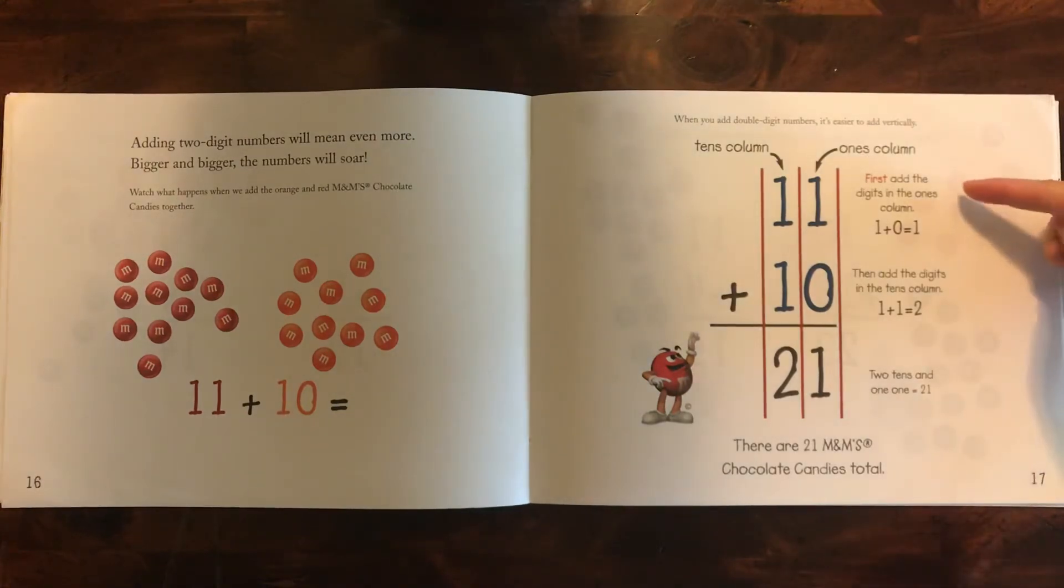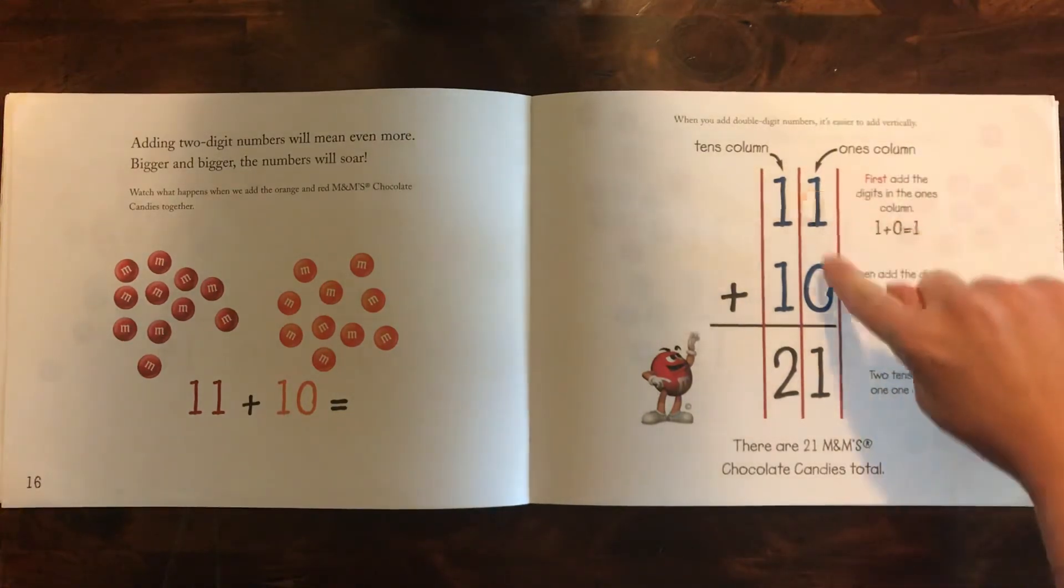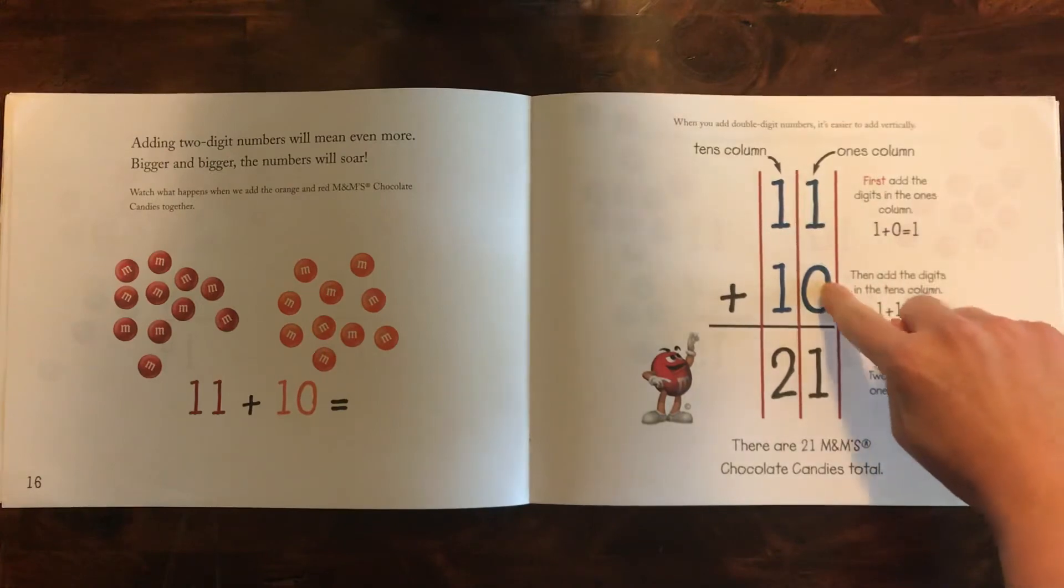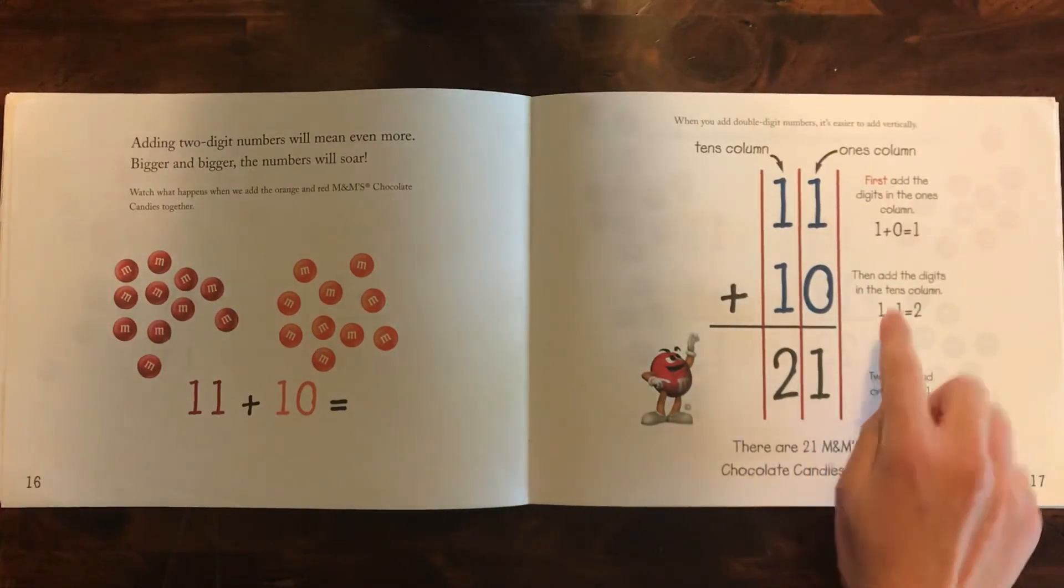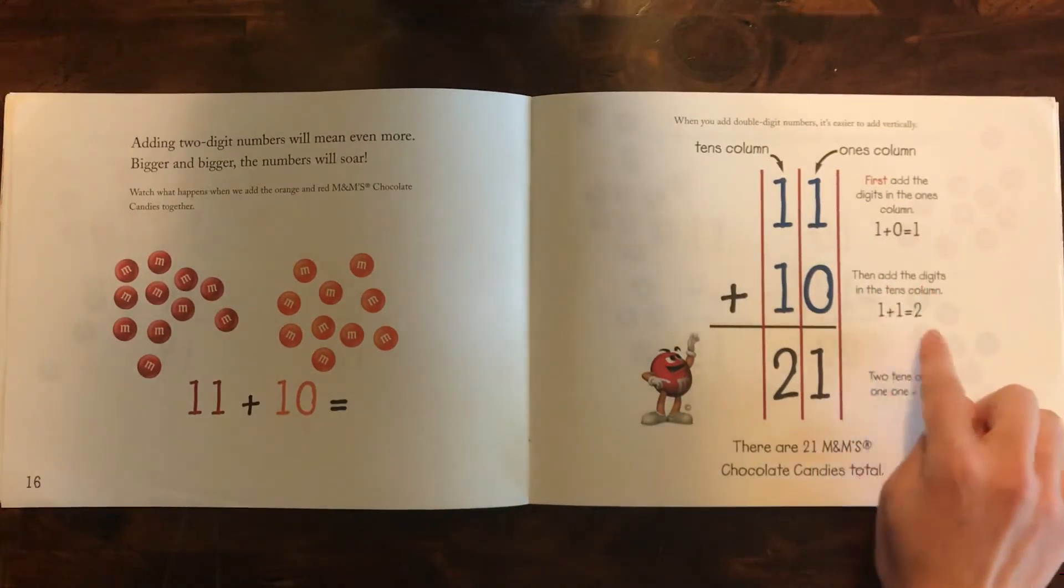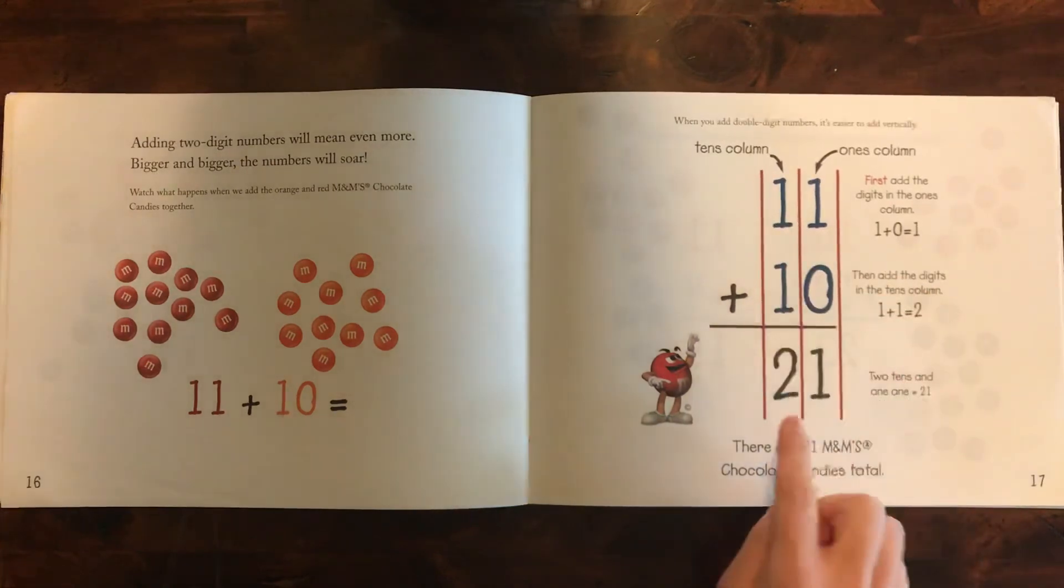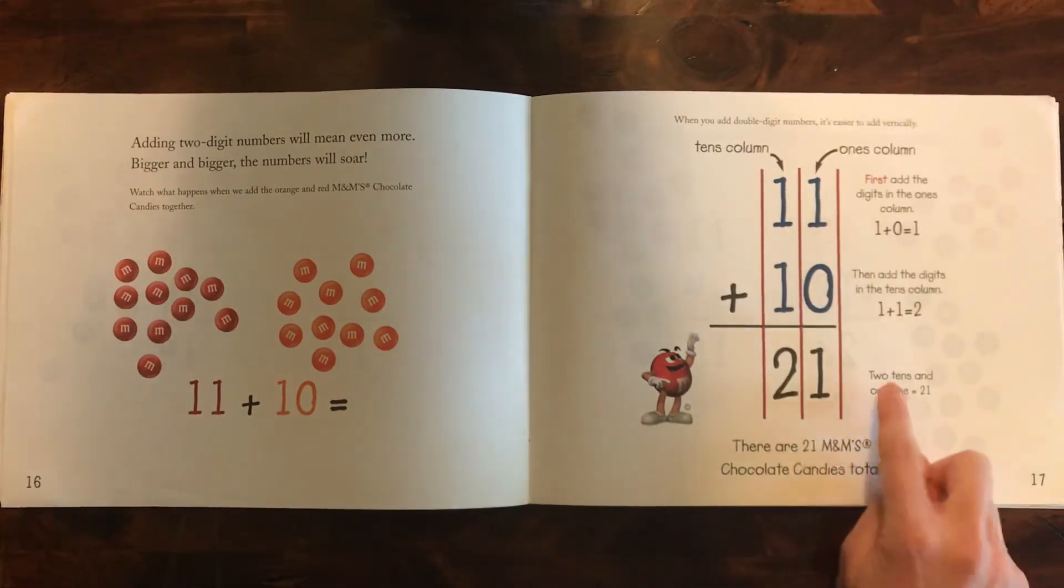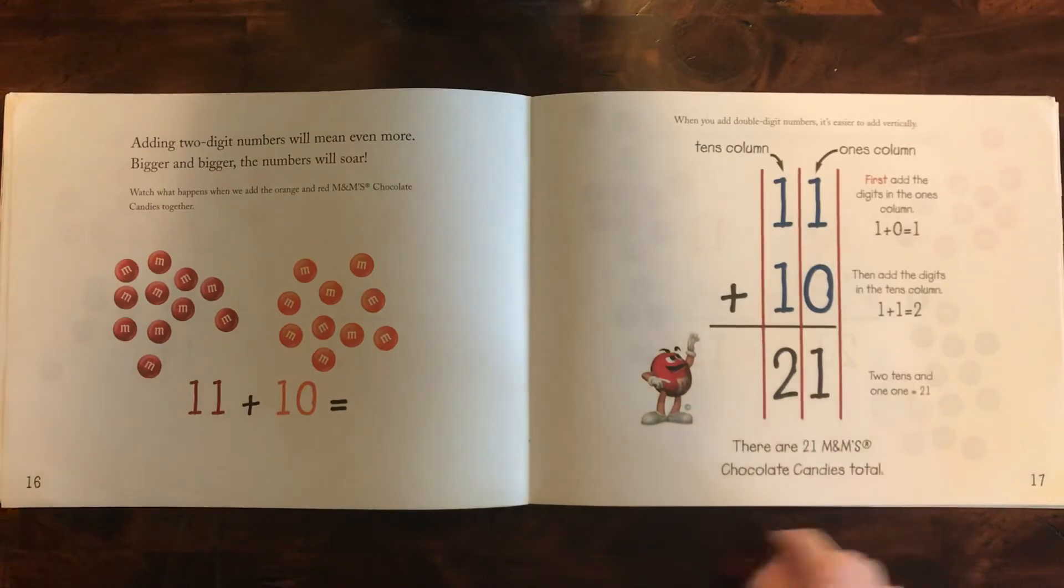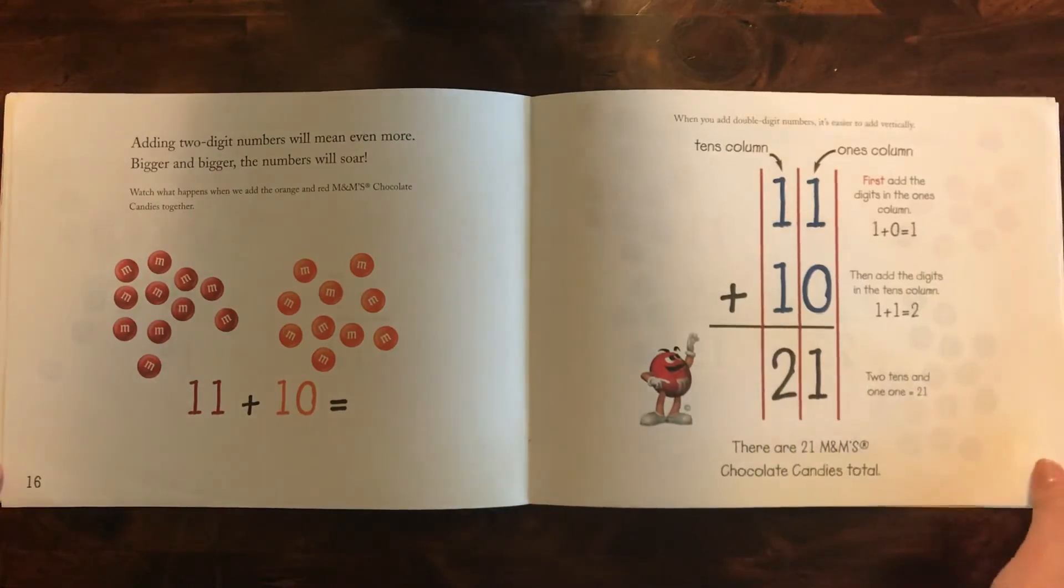First, add the digits in the ones column. So right here, we're going to add one plus zero and that's one. Easy. Then add the digits in the tens column. One plus one is two. Easy. So two tens and one one is 21. There are 21 M&Ms total.